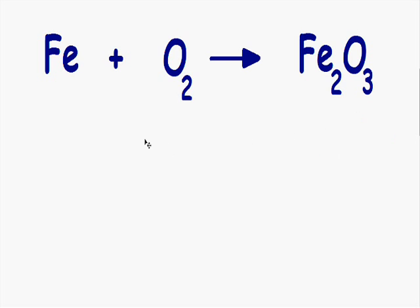Let's get started and start balancing this equation. First, let's start with the iron. We need to have the same number of iron on the left-hand side as we do on the right-hand side. Notice on the left-hand side we have one atom of iron, and on the right-hand side we have two atoms of iron. So since we need to make them equal, I'm going to put two molecules of iron on the left-hand side.